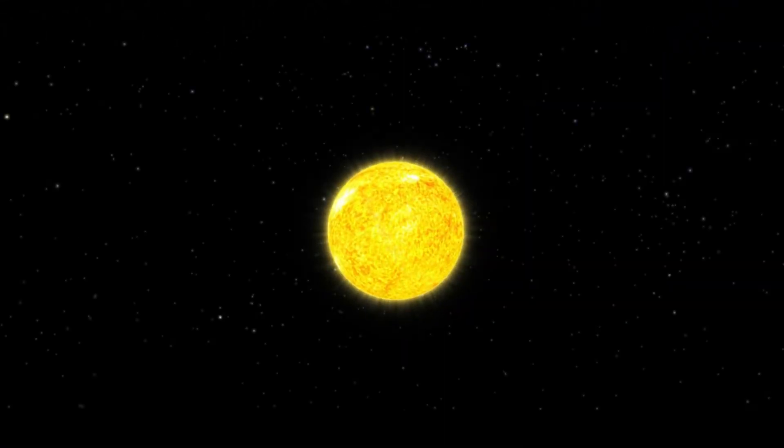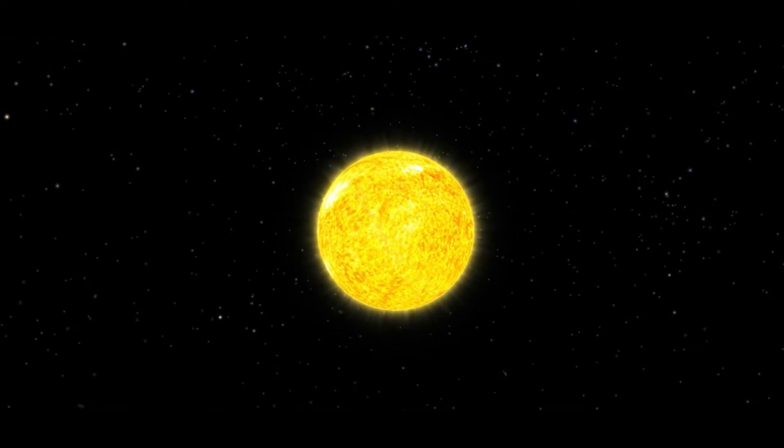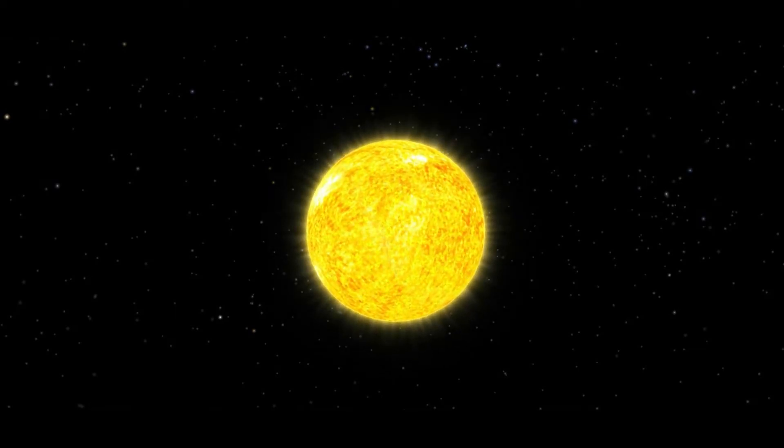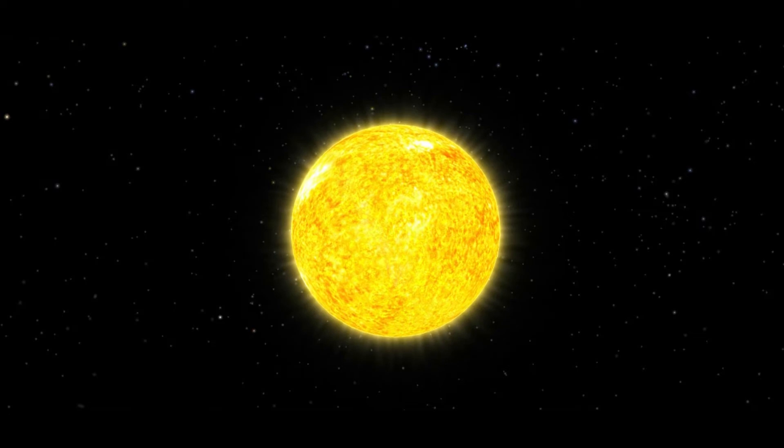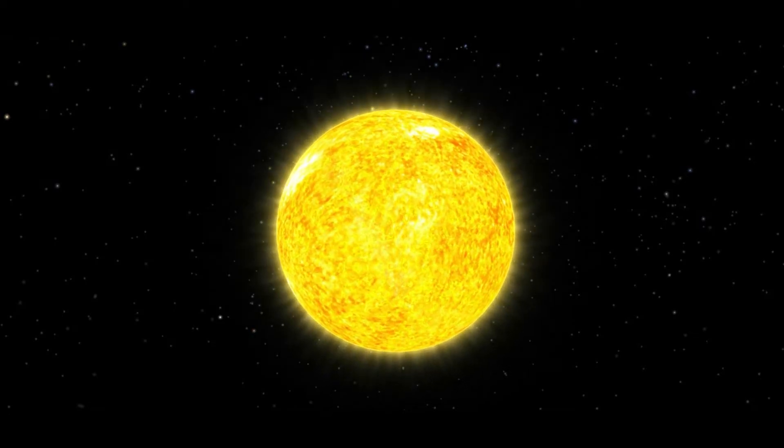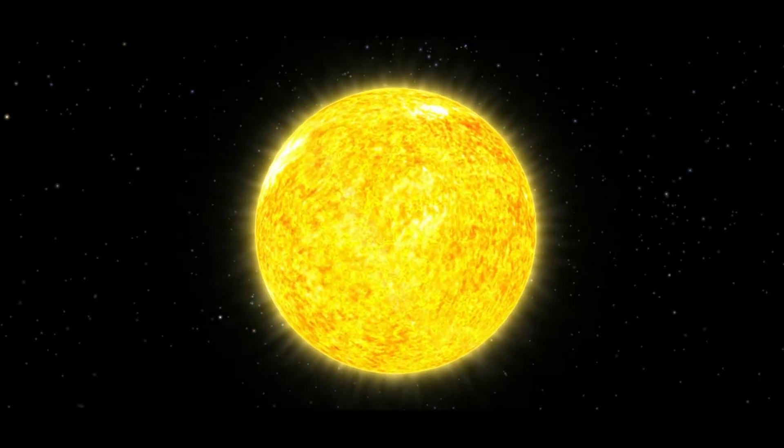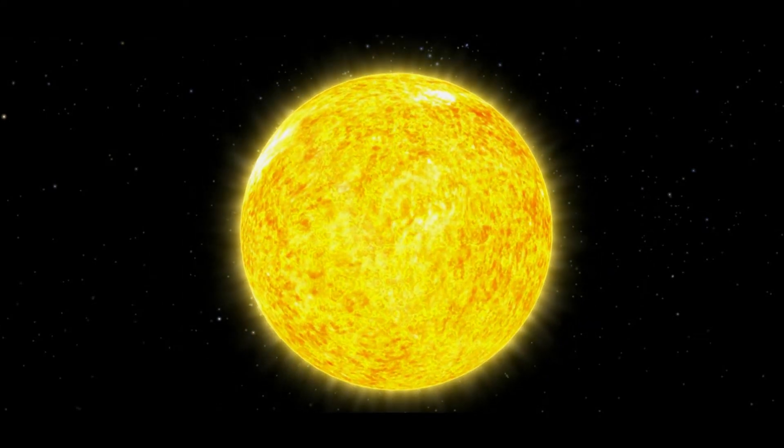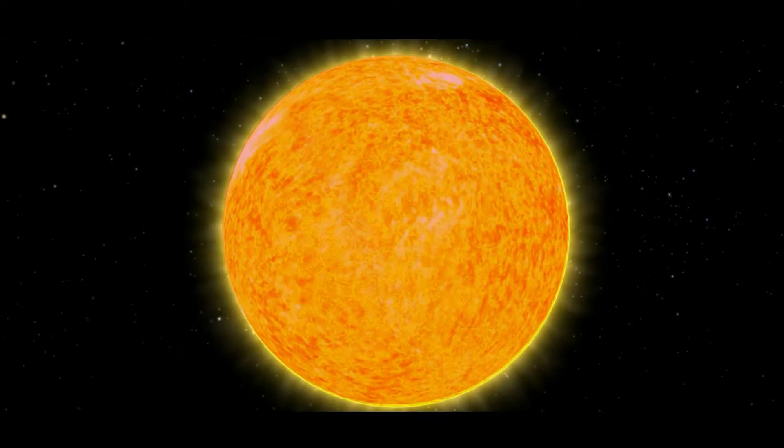As the Sun grows old it will expand. As the core runs out of hydrogen and then helium, the core will contract and the outer layers will expand, cool down and become less bright. It will become a red giant star.